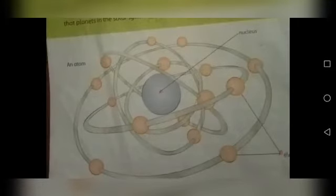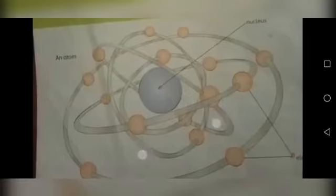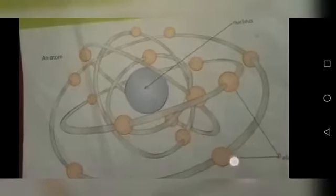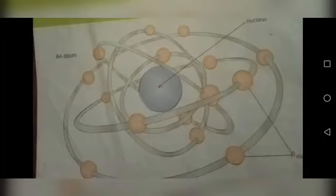Nucleus کے اندر دو particles ہوتے ہیں جو کہ protons اور neutrons ہیں. لیکن nucleus سے باہر اور atom کے اندر ایک اور particle موجود ہوتا ہے جسے ہم بولتے ہیں electron. یہ آپ orange color میں دیکھ رہے ہیں جو پورے atom کے سائیڈوں پہ بنے ہوئے ہیں.